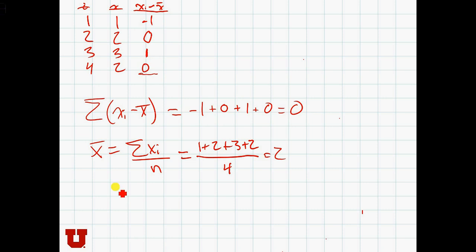Next, let's look at the sum of xi minus x̄ all squared. To do that, we're going to square the deviations. So we have 1, 0, 1, 0, just because 1 squared is 1 and 0 squared is 0. The sum of these deviations now is going to equal 2. The sum of the squared deviations equals 1 plus 0 plus 1 plus 0, which equals 2.